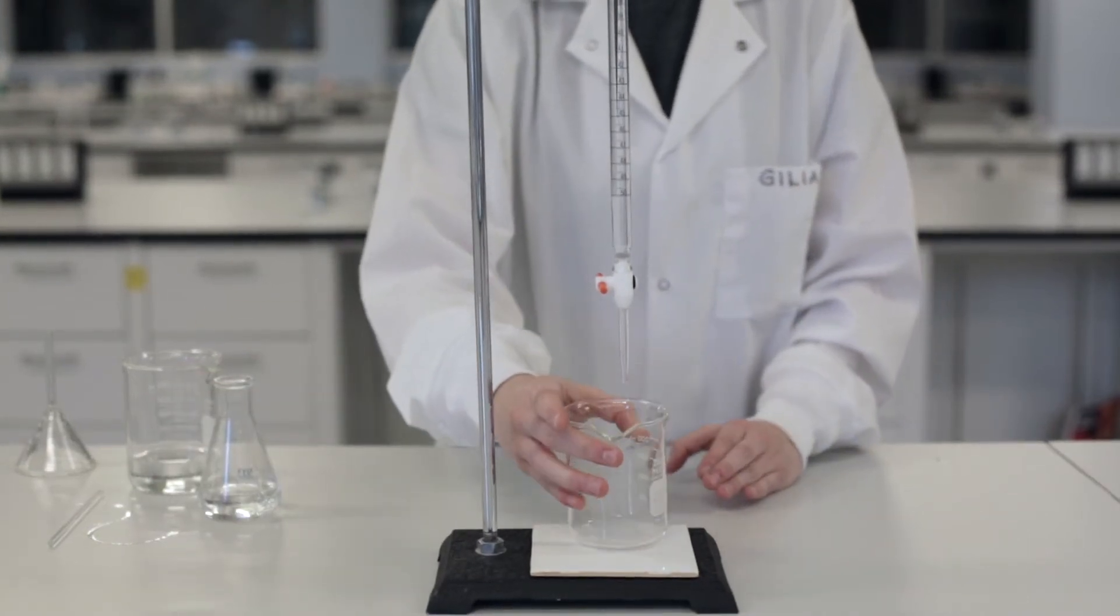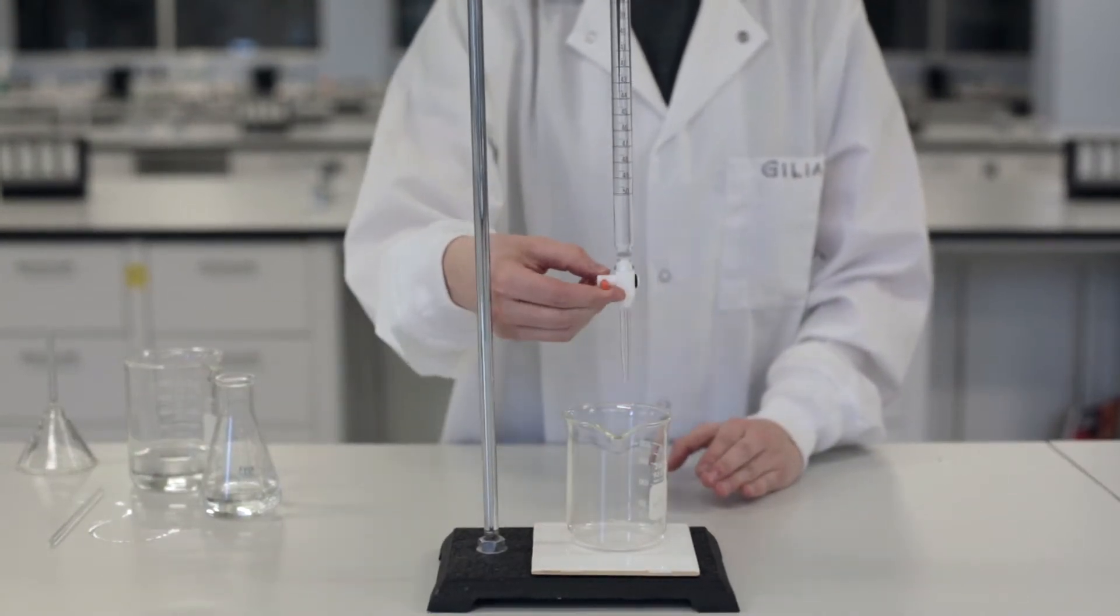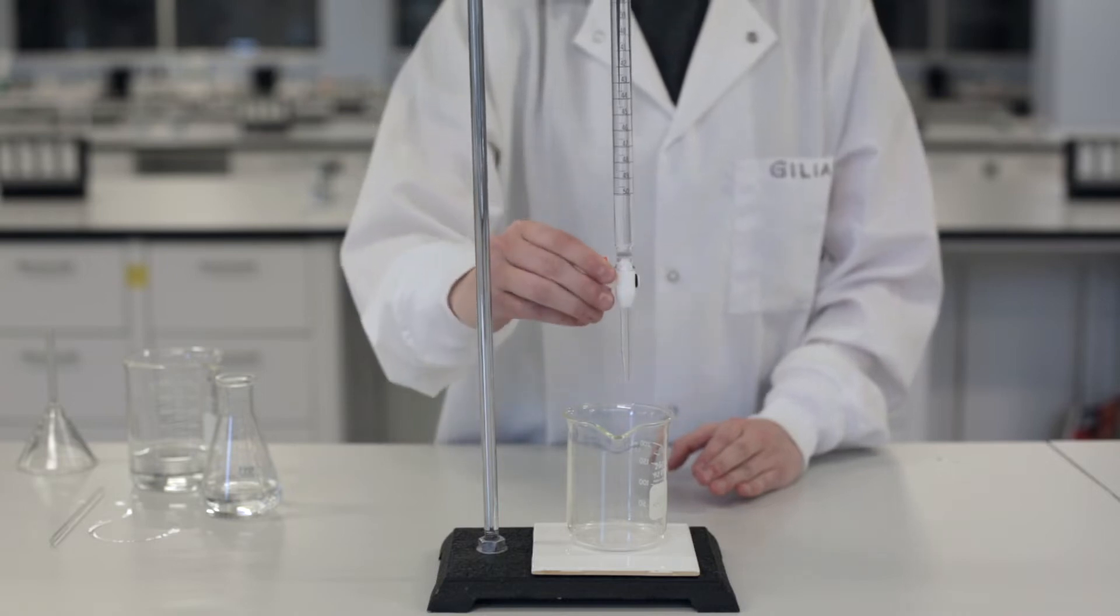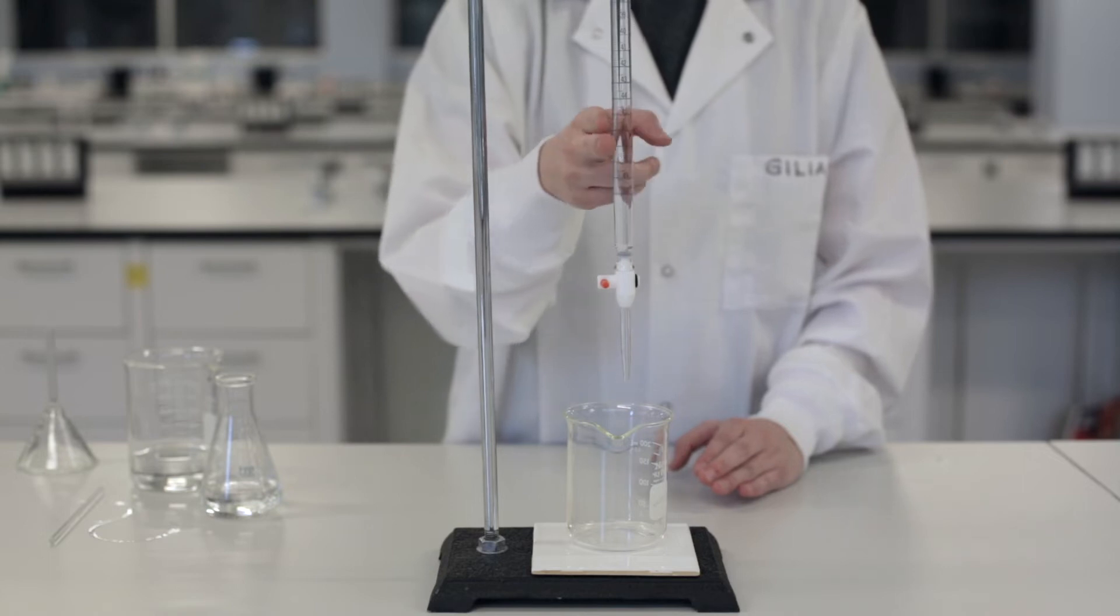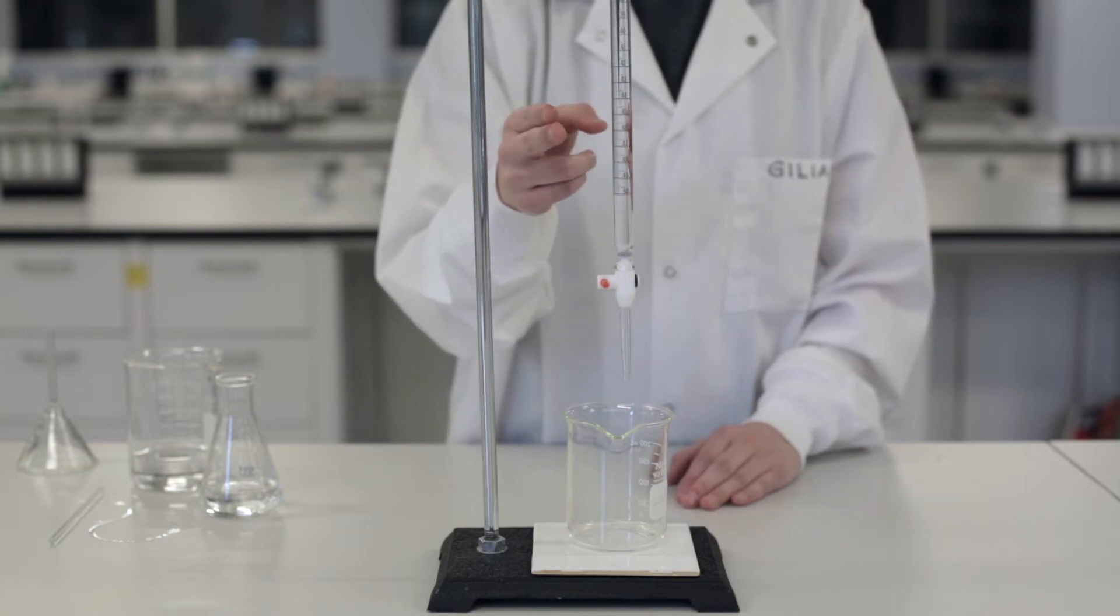Place a waste beaker underneath the burette and quickly open and close the stopcock to release any air bubbles. If there are air bubbles in the top part, gently flick the side of the burette to remove them.